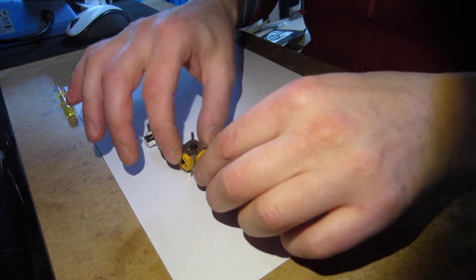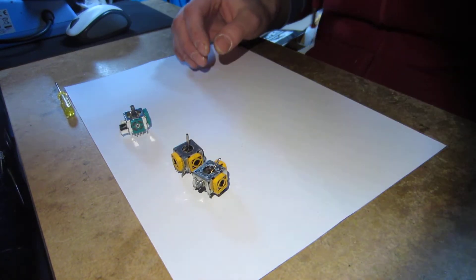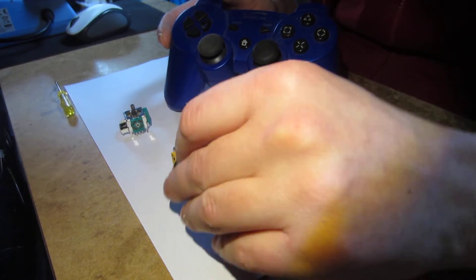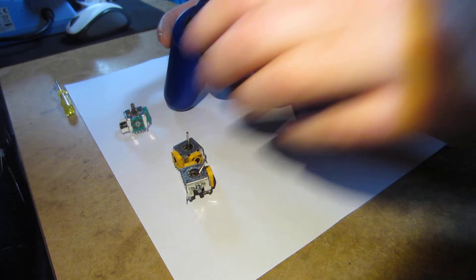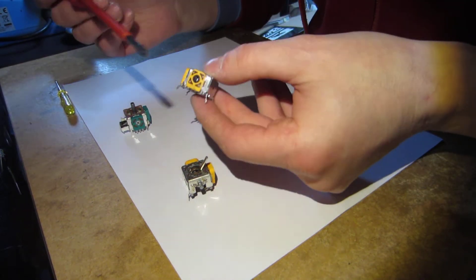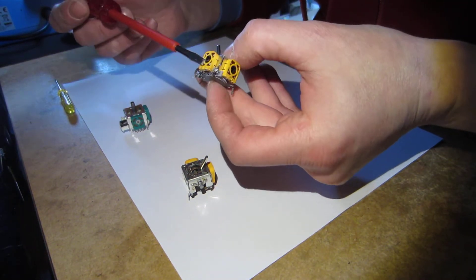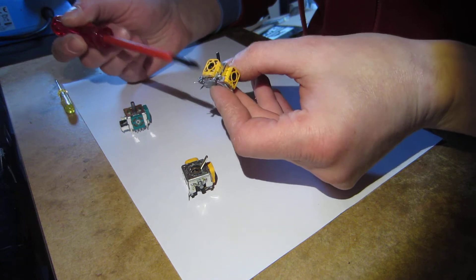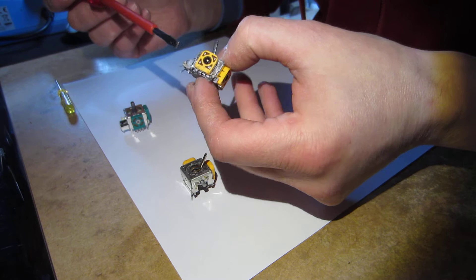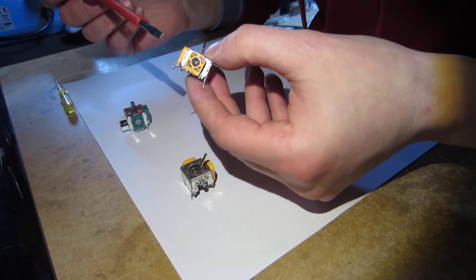These were removed from some old gamepad, maybe PS3 or something like this. Xbox 360 controllers are also very good quality. Basically what they are is two 10k pots. So this is one pot and that's another, here are the solder lugs you can just about see them. This was badly removed. Be careful when you're removing them from the gamepad itself.